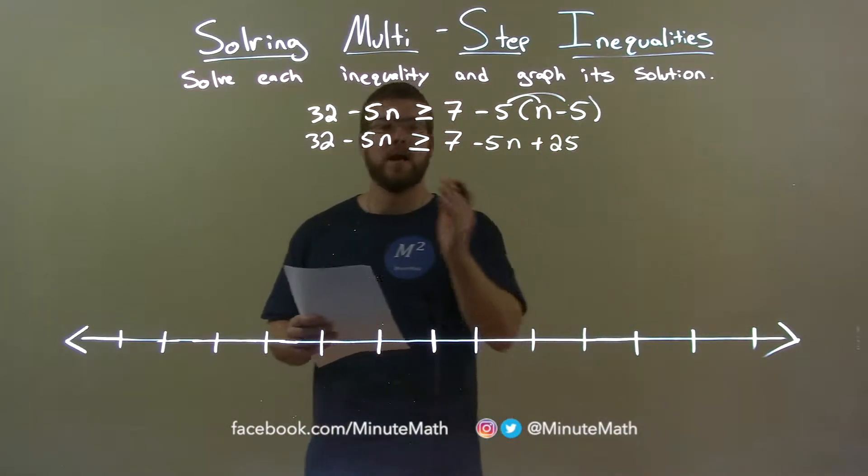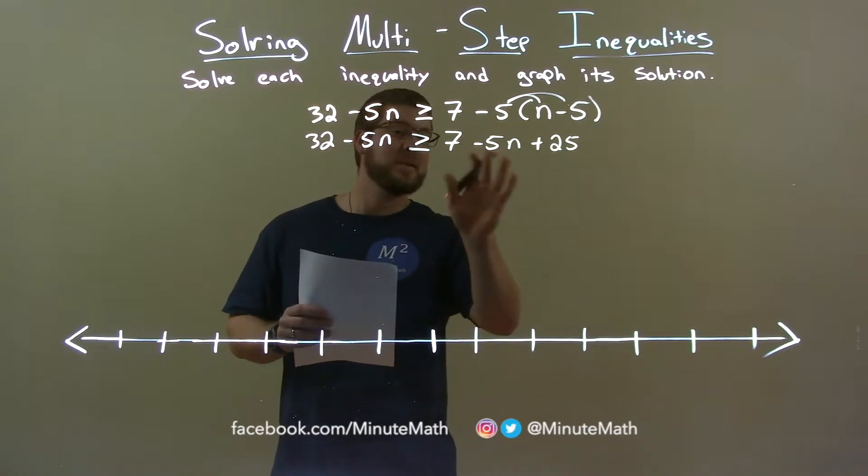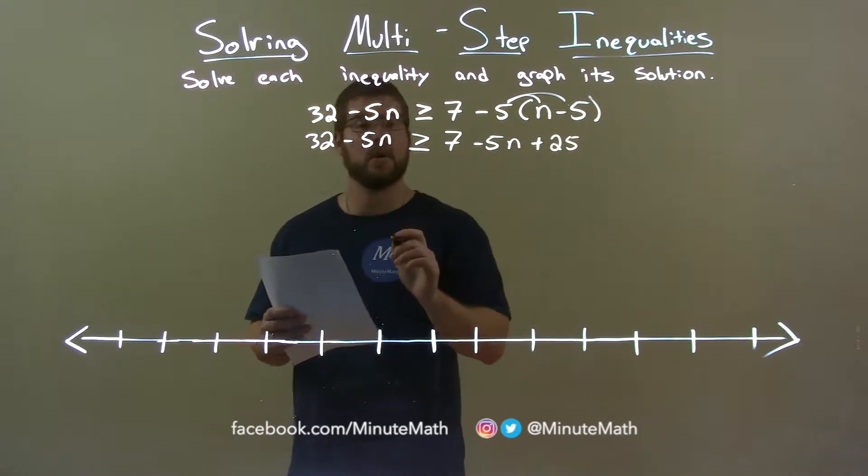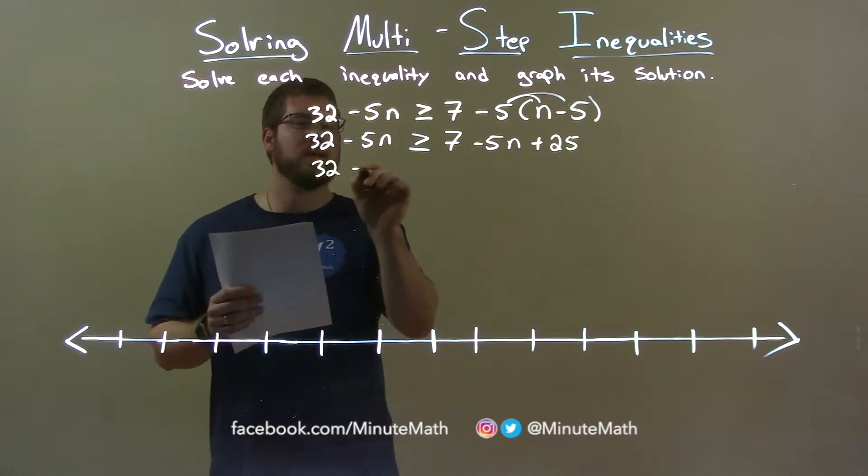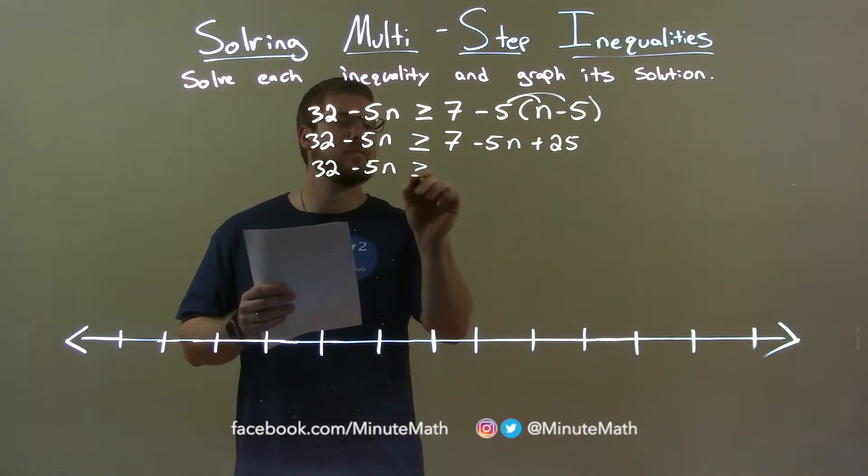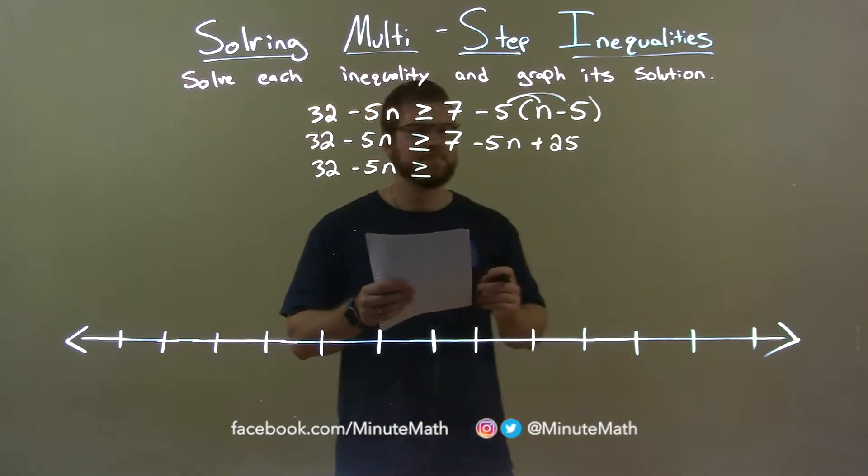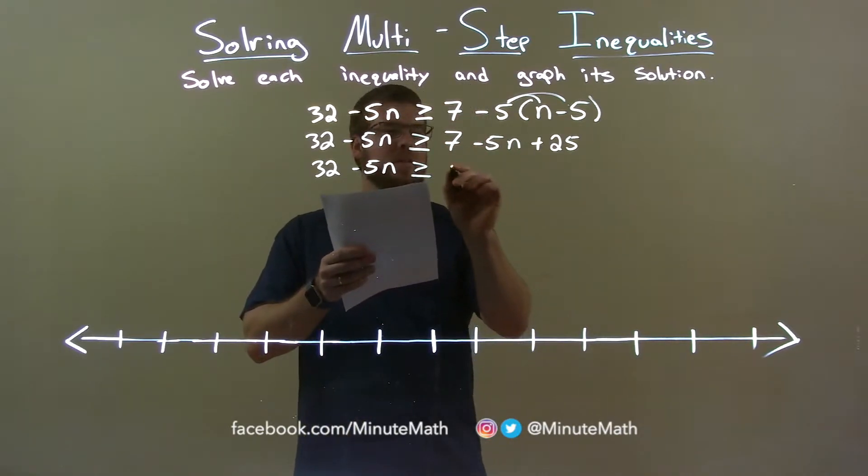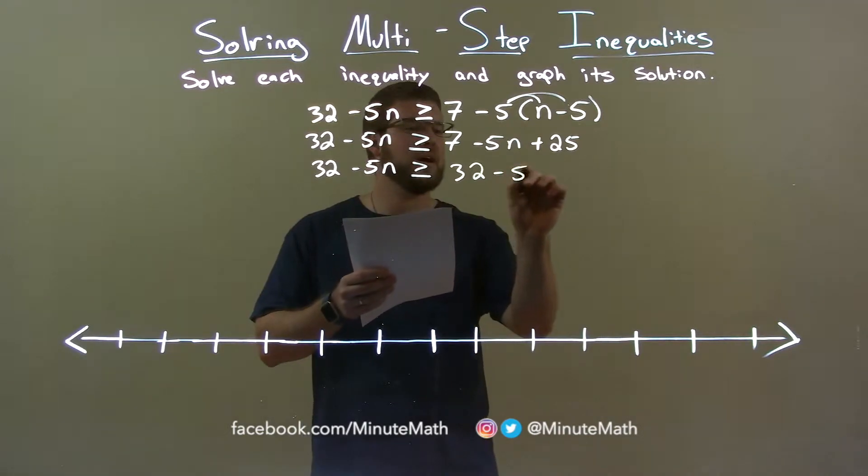Alright, let's combine our like terms. On the right, our numbers will be 7 and 25 come together. So, 32 minus 5n stays where it is and it's still greater than or equal to and 7 plus 25 comes out to be a 32 and it's minus 5n.